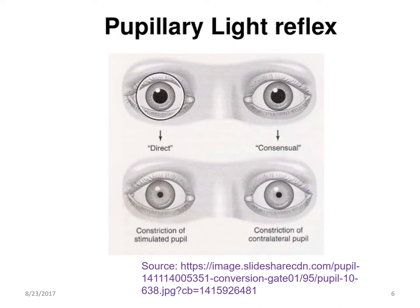And when light is shined into the eye, you find that there is constriction of both the eyes — the direct as well as the consensual or the contralateral pupil undergoing constriction.